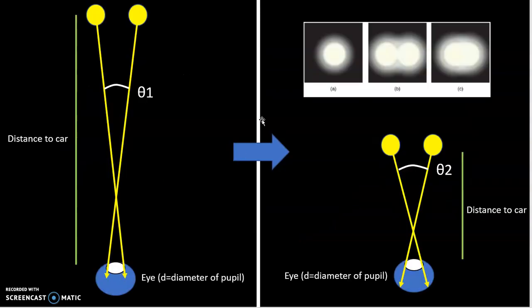Here is a diagram to show that. We have a certain theta, theta one, associated with the light sources as they travel through a circular aperture — in this case it's the pupil of our eye. Another way you could increase this is by dilating your pupil, giving you better ability to resolve the two different images. Or, as the light source gets closer, the theta increases and our ability to resolve the two separate images increases as well.